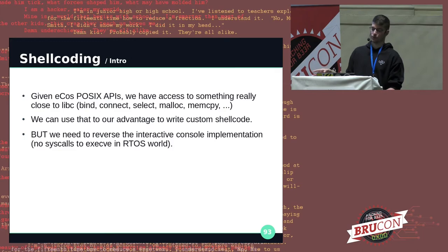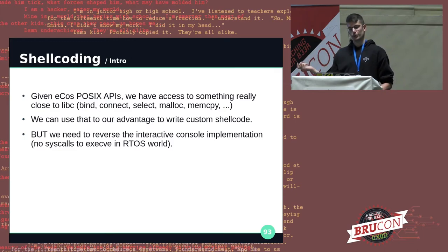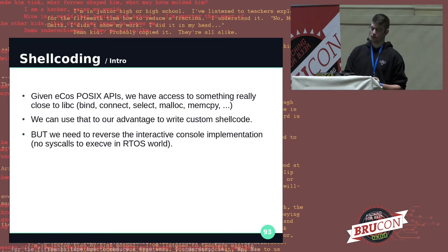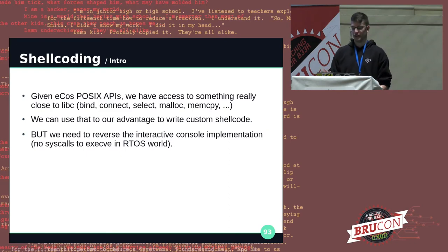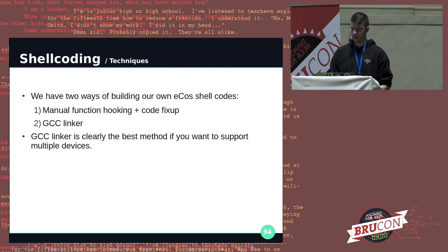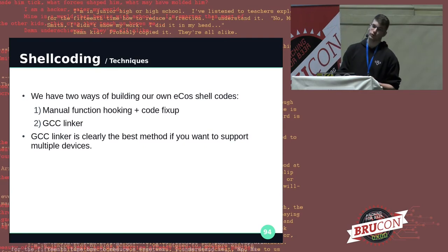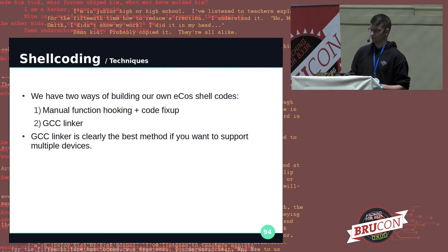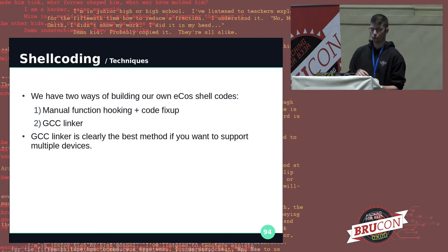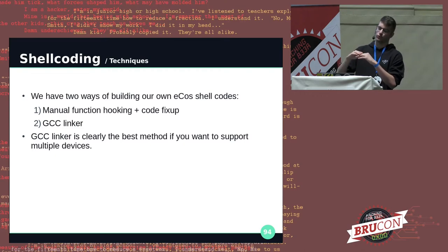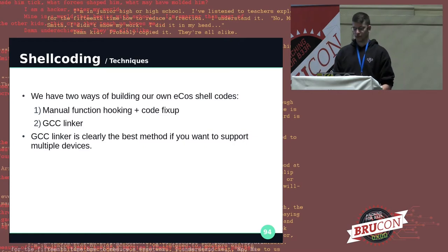We can use that to write custom shellcode. But as I said, we need to reverse the interactive console implementation — there are no syscalls, so no execve or /bin/sh. We have two ways of building ECOS shellcode: either manual function hooking and code fixup — the method used by Lyrebird, but really prone to errors because the shellcode is not location-aware, so jump instructions tend to jump somewhere else — or using the GCC linker, which I consider the best method.